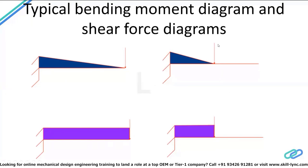Similarly, for a cantilever beam loaded at an intermediate point, beyond the point of application of load there is no structural response at all — zero moment all the way to the free end. Only after the load point does the bending moment start increasing all the way to the support. The same applies to the shear force: it is zero beyond the load point and then constant between the load and the support.